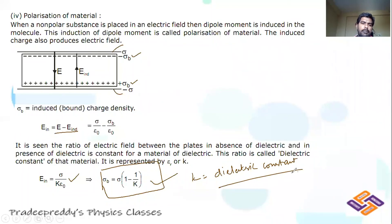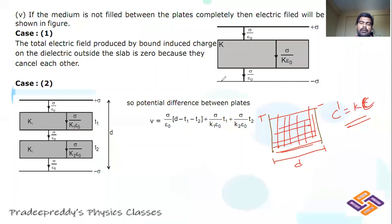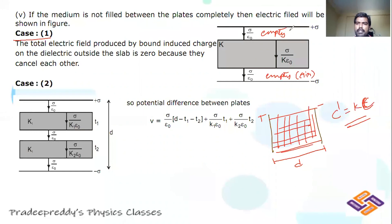When a dielectric medium is placed between two plates, its capacitance increases by default. Now let us consider case one — where the space between the plates is not completely filled with dielectric; it is partially filled. Part of the space is air. In the air medium, the electric field is σ/ε₀. Inside the dielectric medium, the electric field is σ/(k·ε₀). The total field produced by the bound induced charge on the dielectric outside the slab is zero, because they cancel each other.